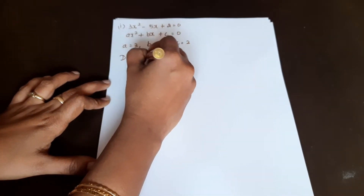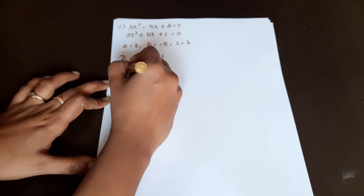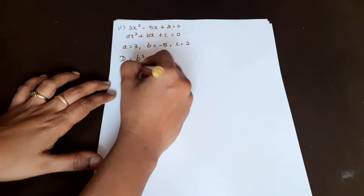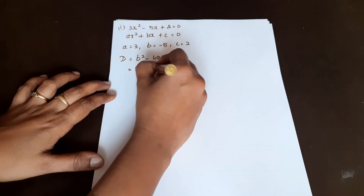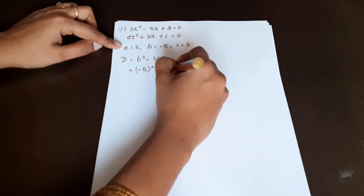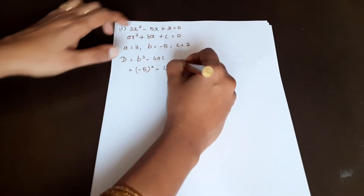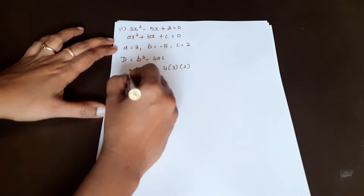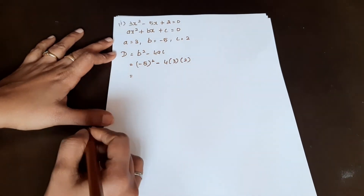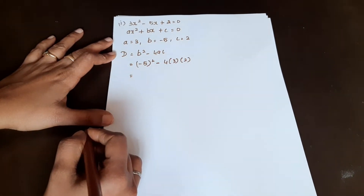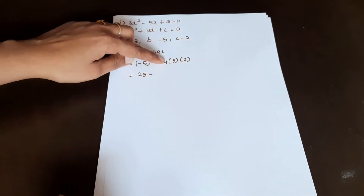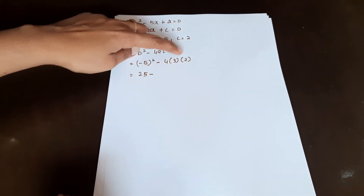D is equal to b squared minus 4ac. We calculate this to determine the nature of the roots.